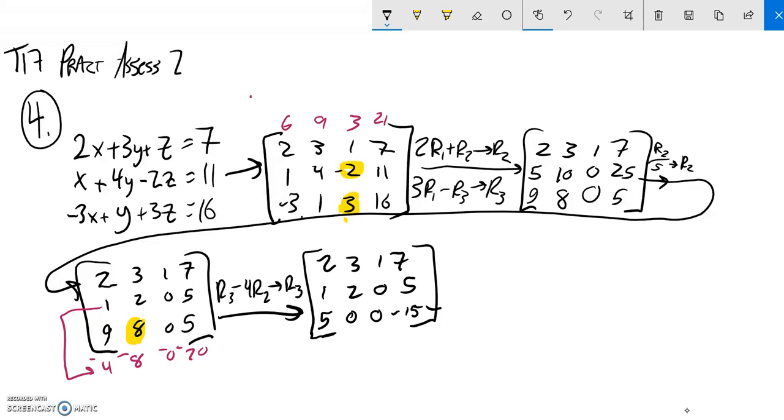So, now I know from this equation that 5X is negative 15. So, X must be negative 3. I can take that information and plug it into this equation. 1X, so negative 3 plus 2Y equals 5. So, add 3 to both sides.